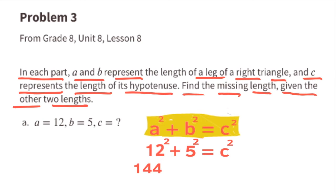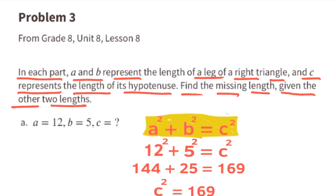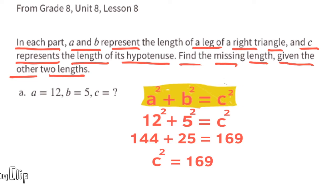12 squared is 144, 5 squared is 25, and 144 plus 25 equals 169. So c squared equals 169, meaning side length c is the square root of 169. Since the square root of 169 is 13, the hypotenuse of this triangle is 13 units.